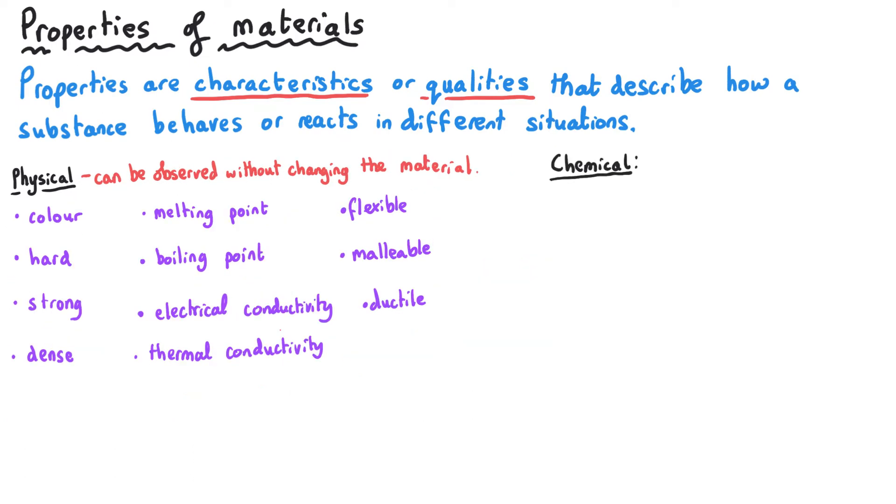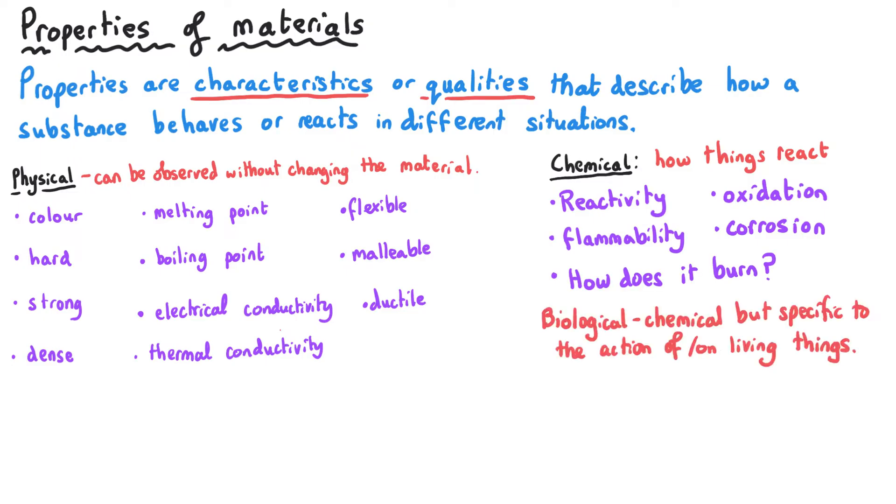Other properties are called chemical properties and this is more to do with the reactivity of a substance, whether it easily oxidizes or corrodes, is it flammable. And we can also have biological properties such as toxicity or the biodegradability of a substance.